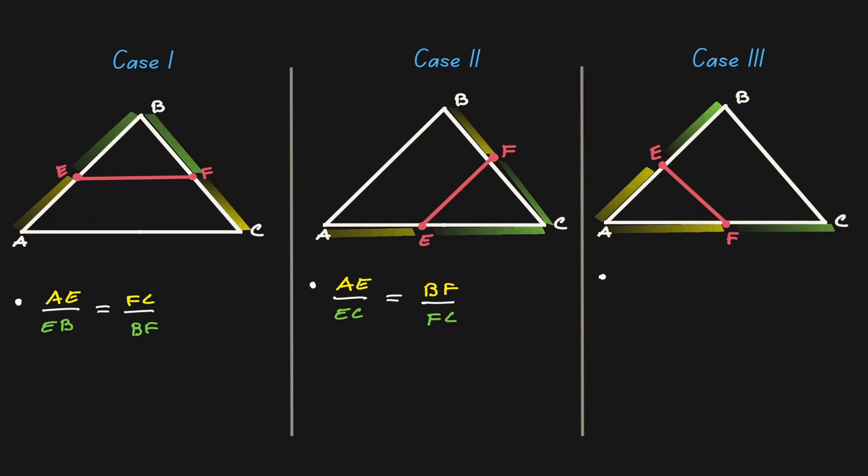And if that's the case, then our proportion will be AF divided by FC, and that should be equal to AE divided by EB.